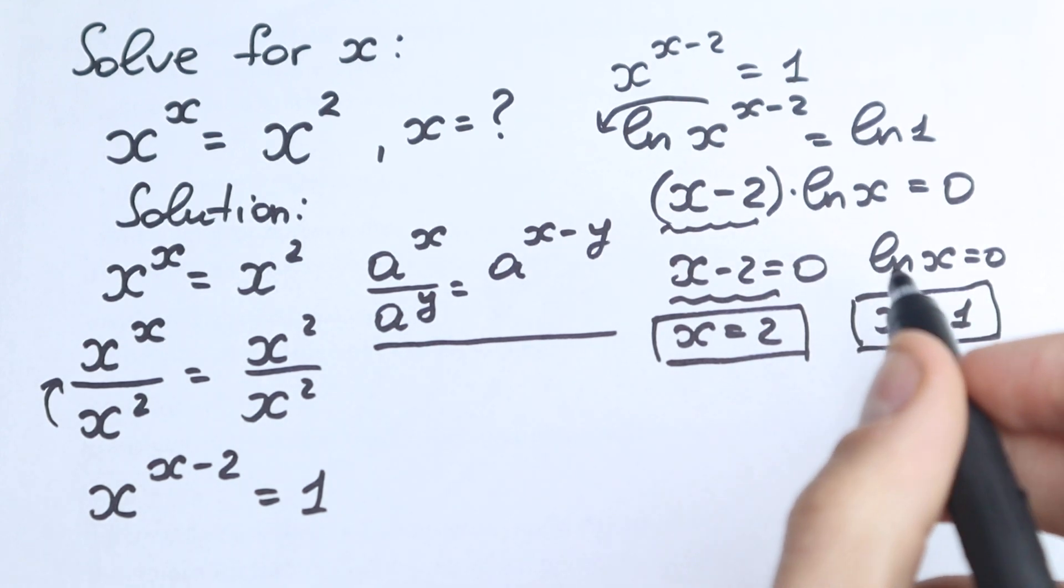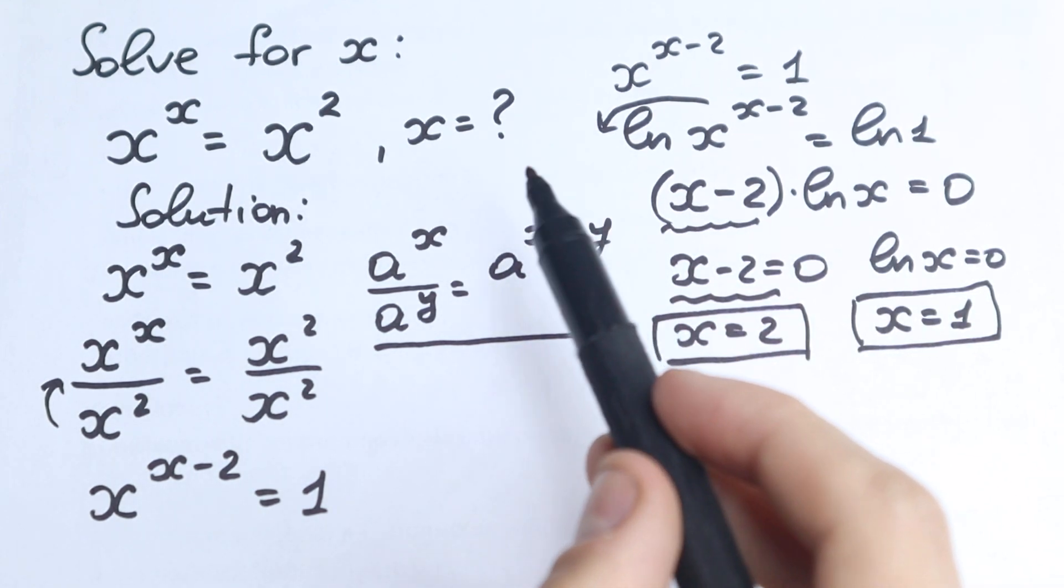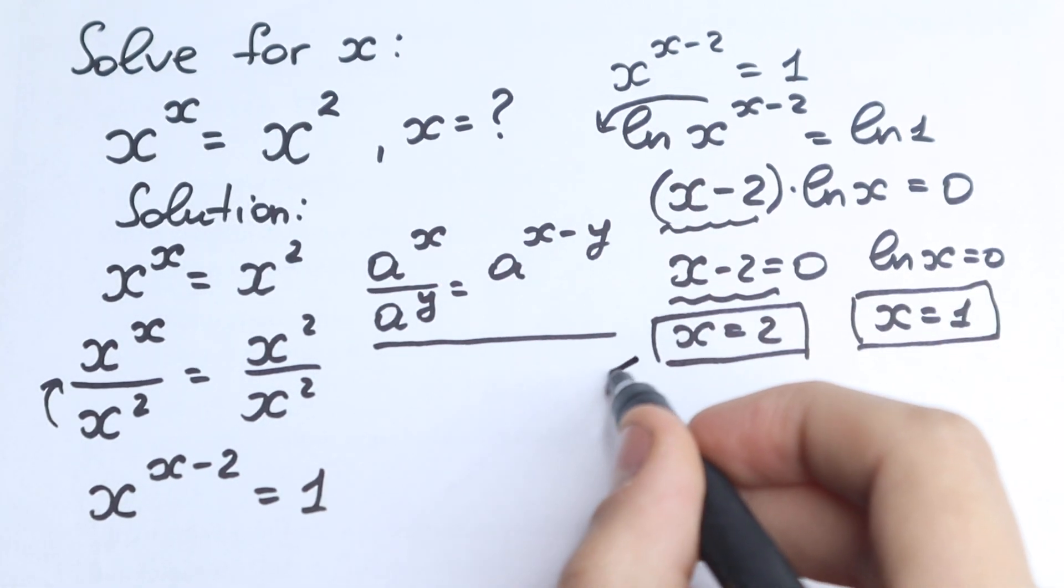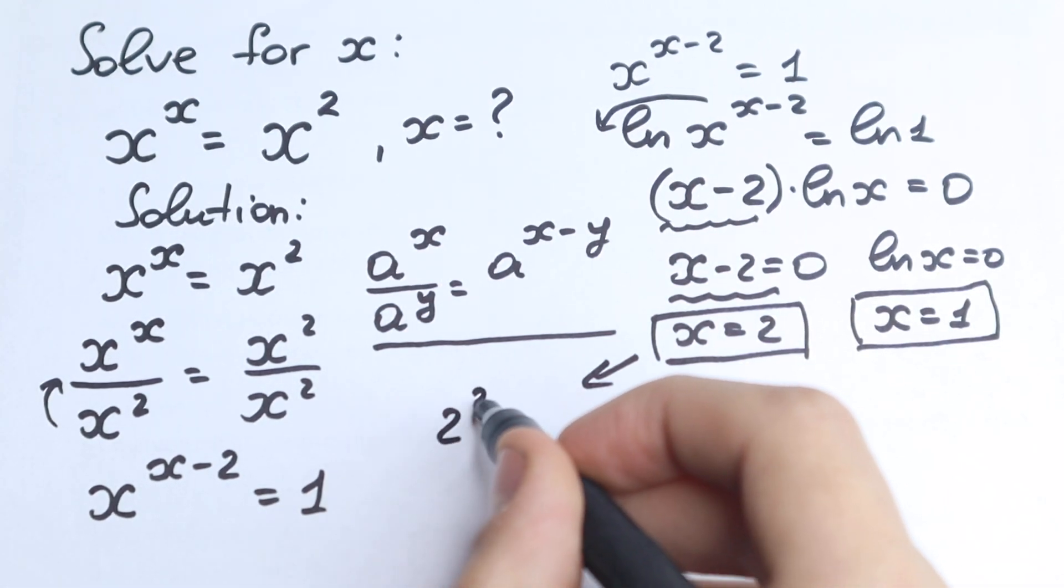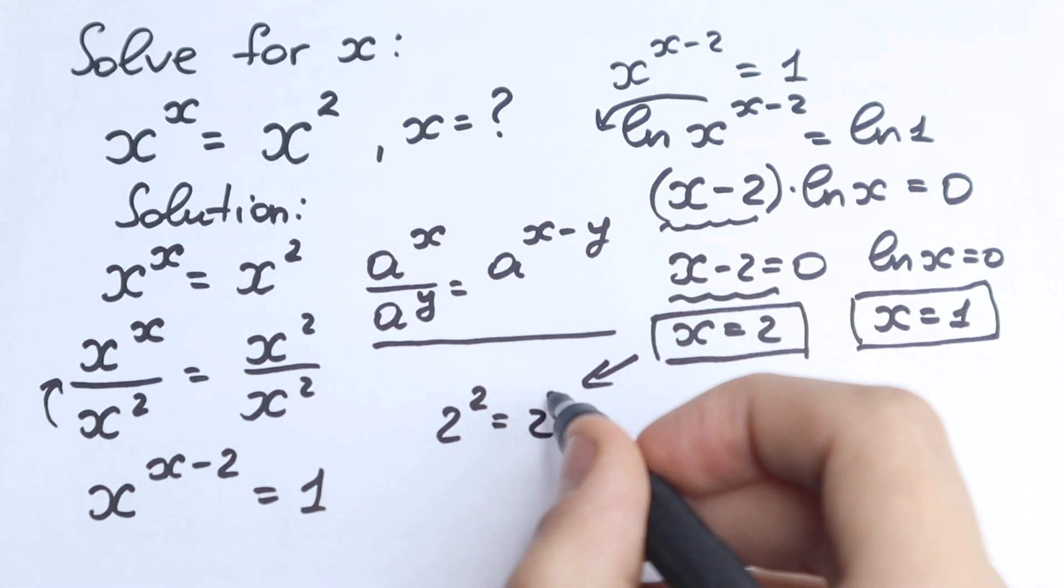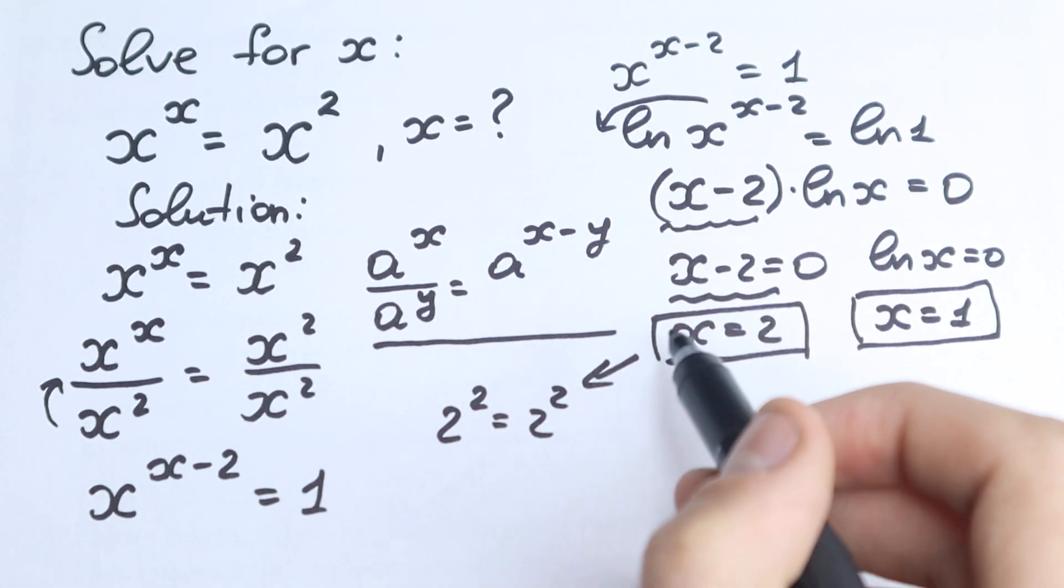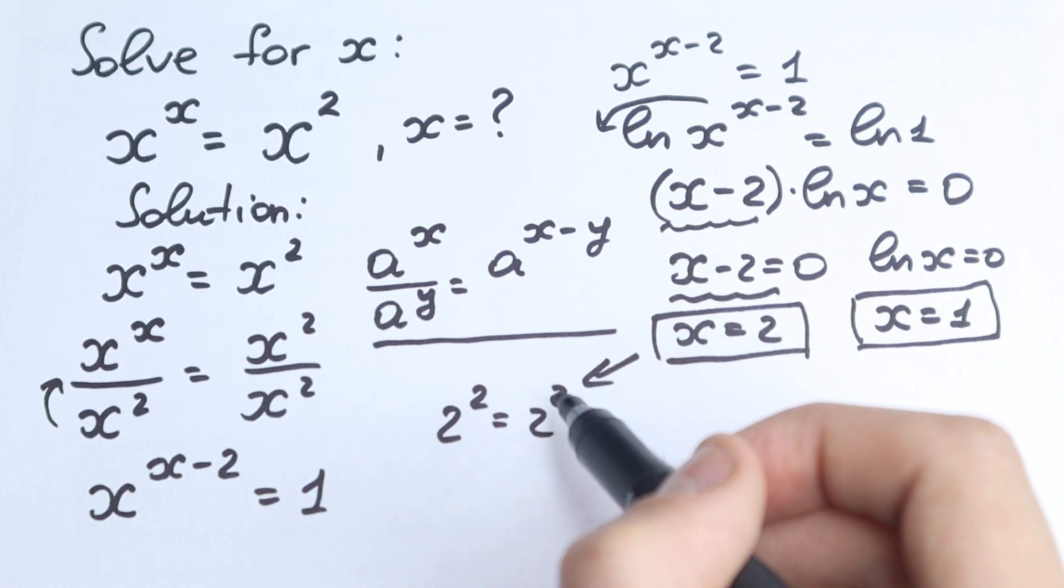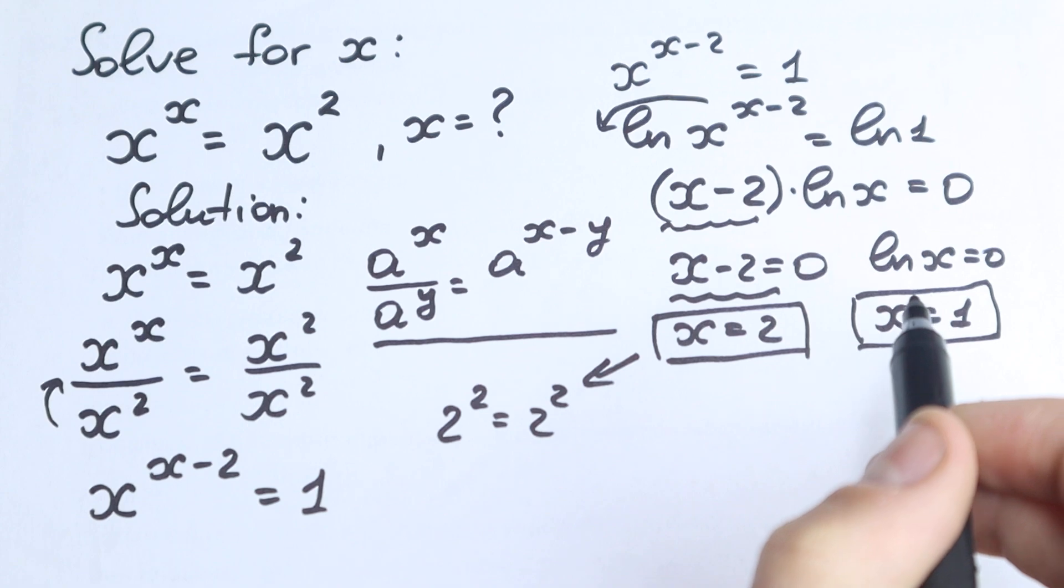And maybe a lot of you solve this by inspection and they say, okay, x equal to 2 is a correct answer, 2 square, so we have like, right here we can easily check it, so we have 2 square equal to 2 square, yeah? And maybe for 95% of students x equal to 2 is an obvious answer, they write it without any problems, x equal to 2, and this is a final answer.